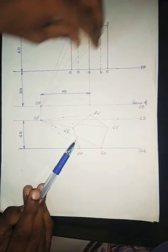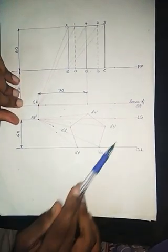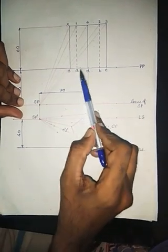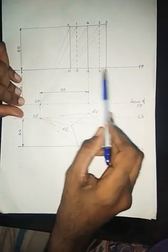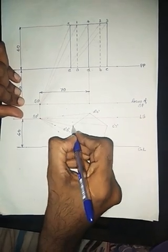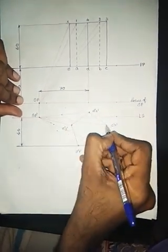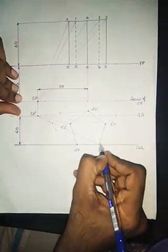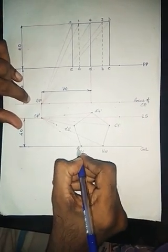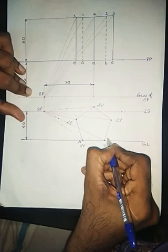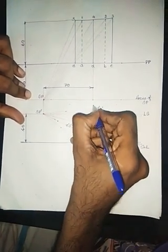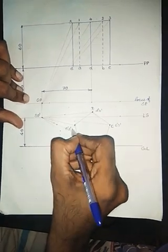Join all the points in the top view to SP, and join all the points in the front view to SP'. Since A, B, C, D, and E are touching the picture plane, these themselves will be the capital points A, B, C, D, and E — you do not need to project them separately.